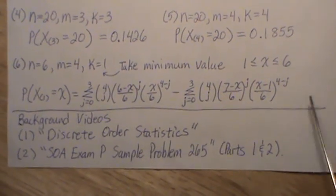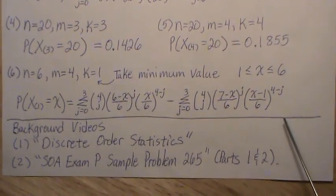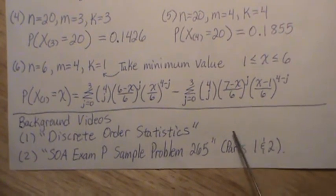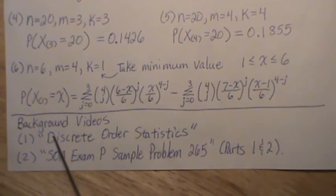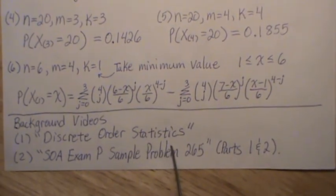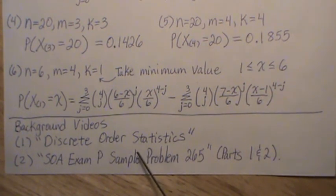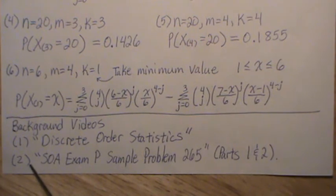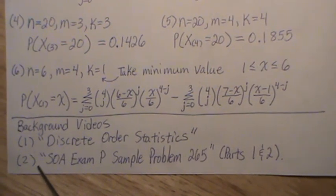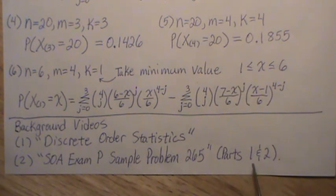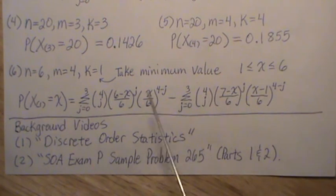Well, if anyone is further interested in this, this is a big area of statistics called order statistics. And specifically, it's called discrete order statistics. And I have two background videos, or three. One is called discrete order statistics, where we talk very in general about discrete order statistics and how to calculate them. And then I have two other videos, but it's part two that deals with discrete order statistics. It's called SOA exam P. So that's an actuarial exam, the probability exam. It's sample problem 265 and parts one and two, if anyone is more interested in discrete order statistics.